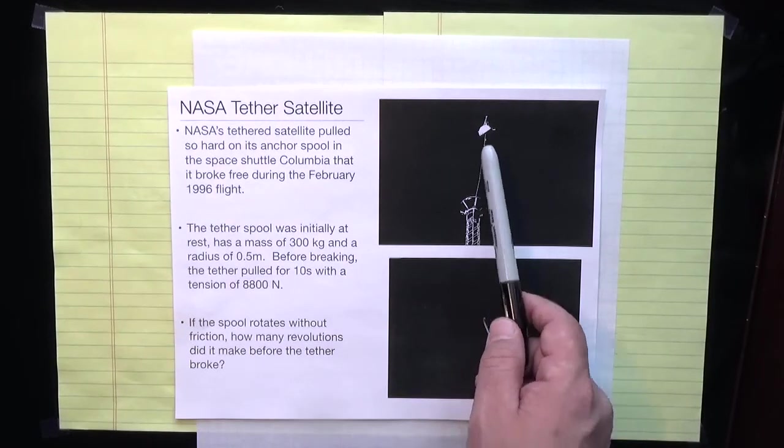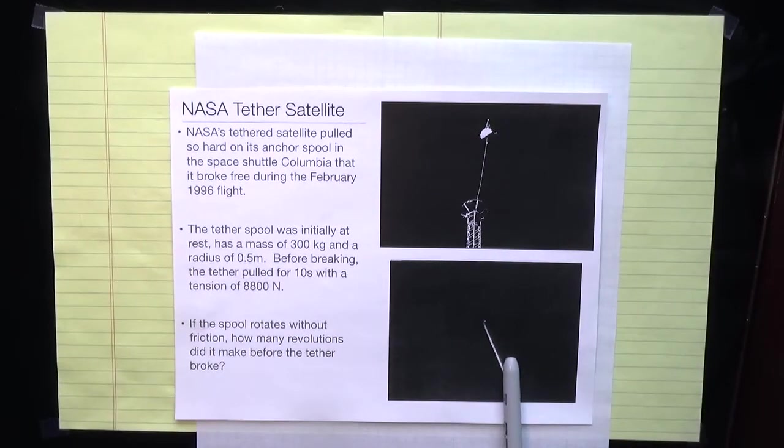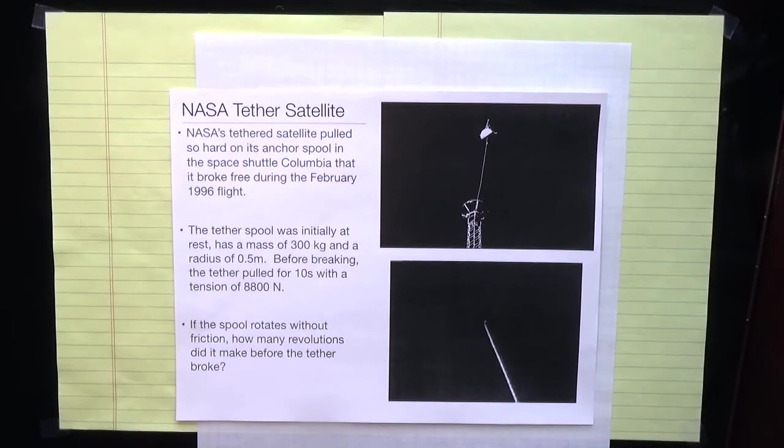They spooled it out and the spool was rotating, and at some point there was too much force and it broke away from the space shuttle and the tethered satellite went flying off into space. We have a very cool video of that.